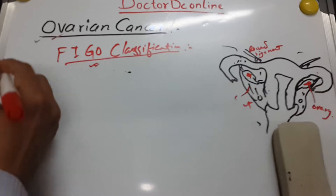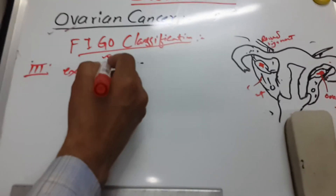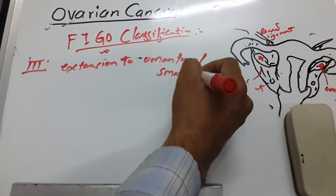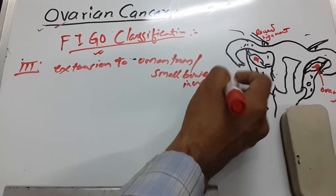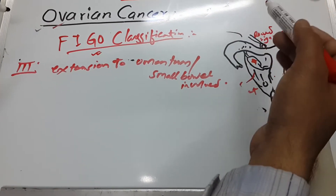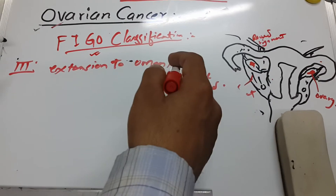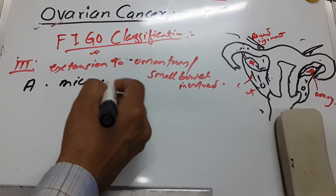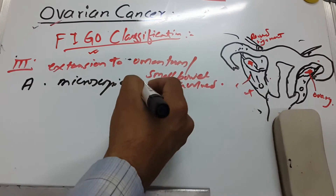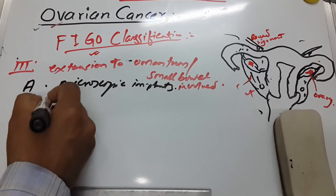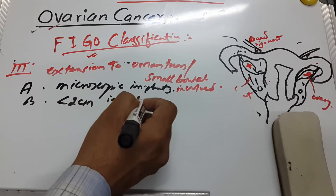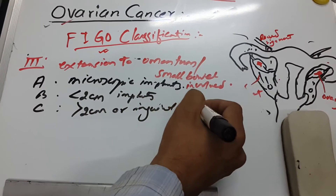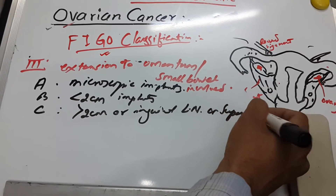Now in the third stage, the cancer has already moved to the pelvis and there is now extension to the omentum and small bowel. In Stage IIIA there are microscopic implants. Stage IIIB has implants less than two centimeters.